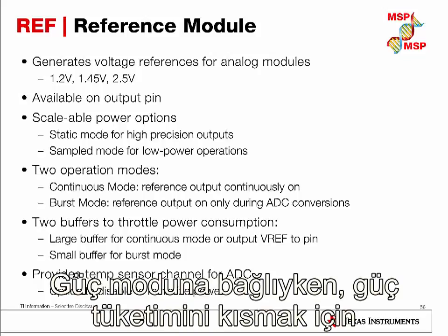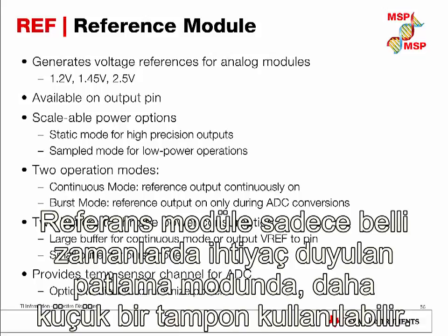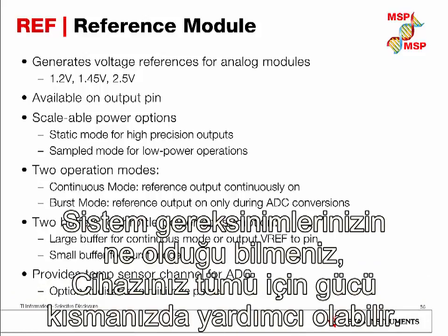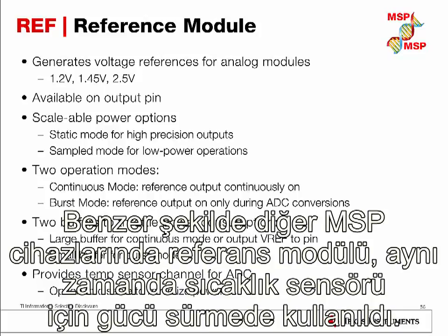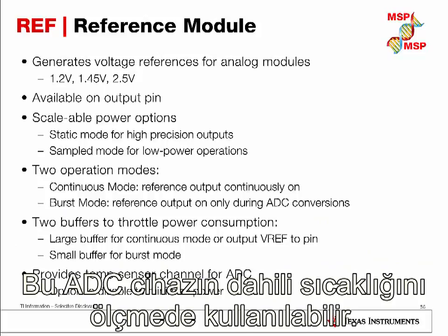Depending on the power mode, two buffers are available to throttle power consumption. In burst mode, where the reference output is only needed at certain times, a smaller buffer can be used. For driving an external component, a larger buffer is used. Understanding your system's requirements helps you optimize power consumption for the entire device. Similar to other MSP devices, the reference module is also used to power the internal temperature sensor channel, which the ADC can use to measure the device's temperature.